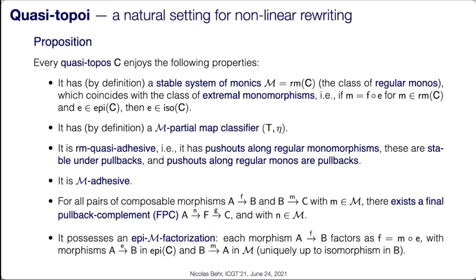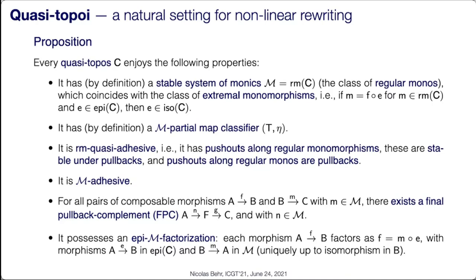Quasi-topoi are m-adhesive categories for m the class of regular monos, which is interesting but too restrictive because you would have to formulate your rules as spans of m-monos. On top of that, a quasi-topos has all the interesting pushouts and pullbacks — in particular it is epi-regular-mono quasi-adhesive, meaning you have all the required push-outs needed for double push-out. It also has all final pullback complements and a good factorization system.